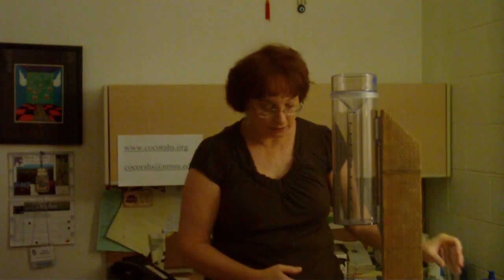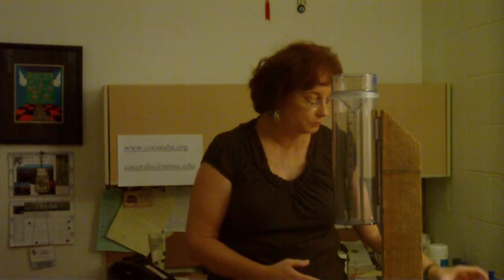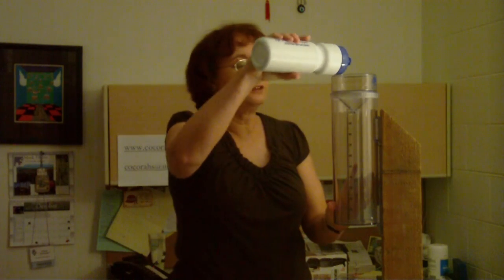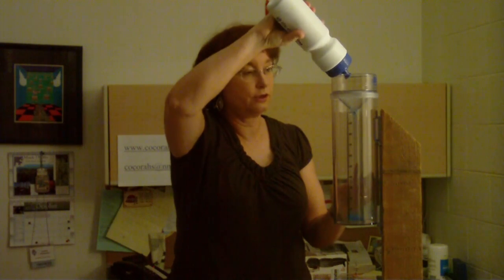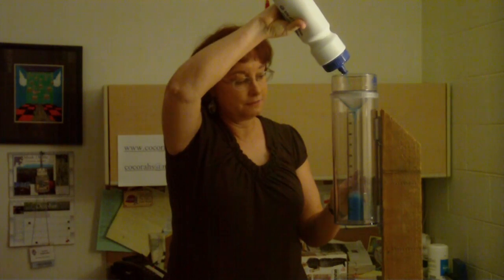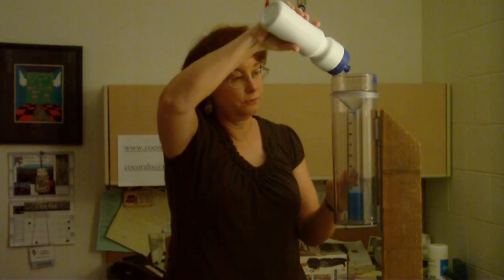The next observation that you're going to see is what we would call a pretty good soaking rain. Now we've just for an example colored this water so you can see it a little bit more clearly in the gauge here. So let's say we have a really great soaking rain, so it's going to fill up. As you see, we've put it as blue.